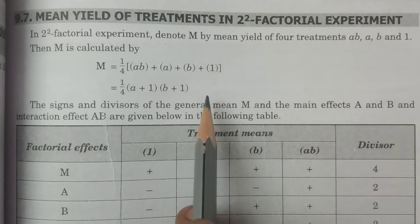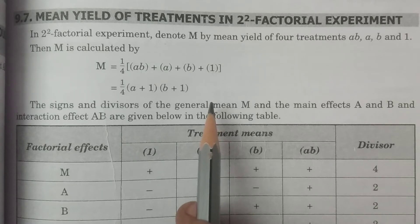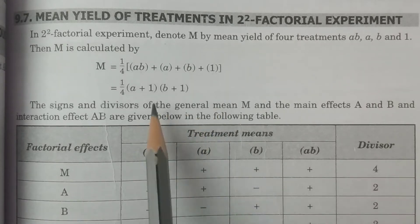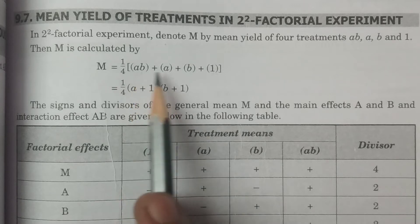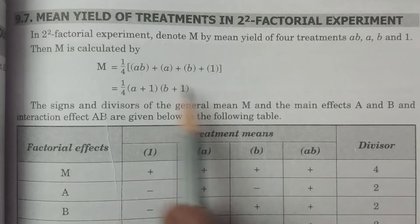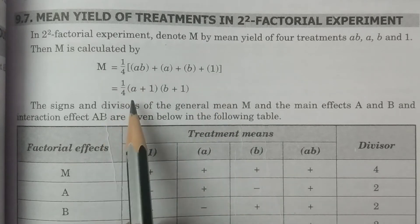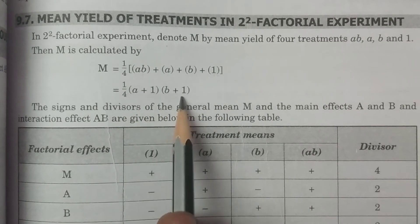The four treatment combinations are a1b1, a1b2, a2b1, and a2b2 — the first and second levels of the two factors A and B and their combinations. The respective mean yields are bracket(ab) + bracket(a) + bracket(b) + bracket(1) divided by 4, which we can simply write as (1/4)(a+1)(b+1).